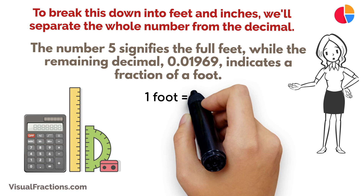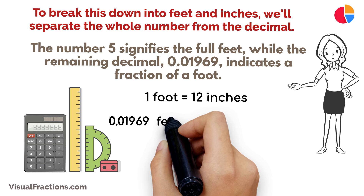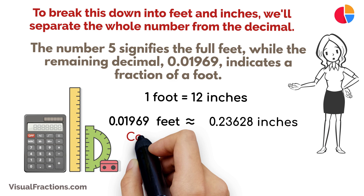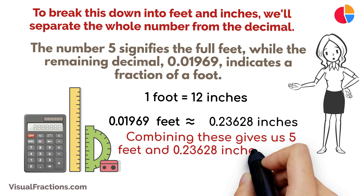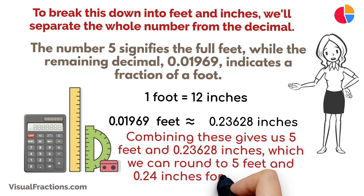Since one foot contains 12 inches, we'll convert the fractional part into inches by multiplying it by 12. Thus, 0.01969 feet is approximately 0.23628 inches. Combining these gives us 5 feet and 0.23628 inches, which we can round to 5 feet and 0.24 inches for simplicity.